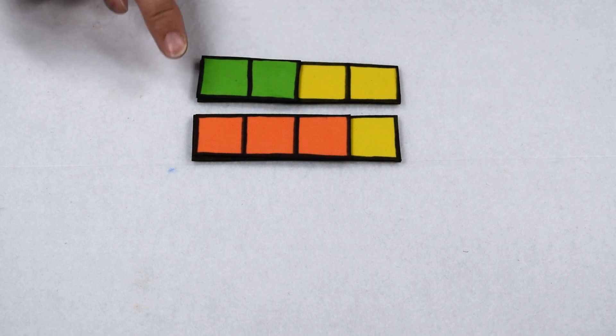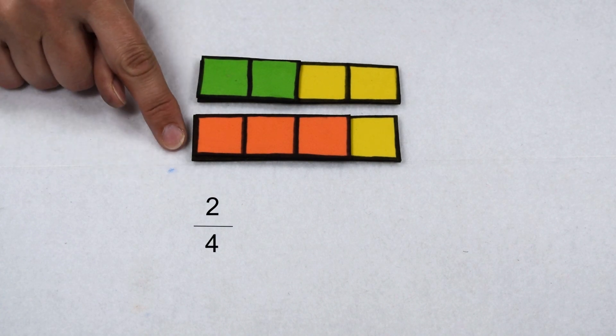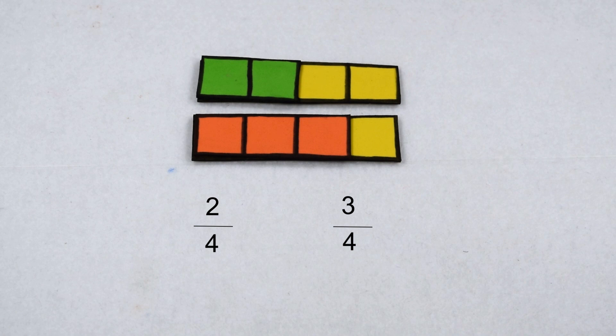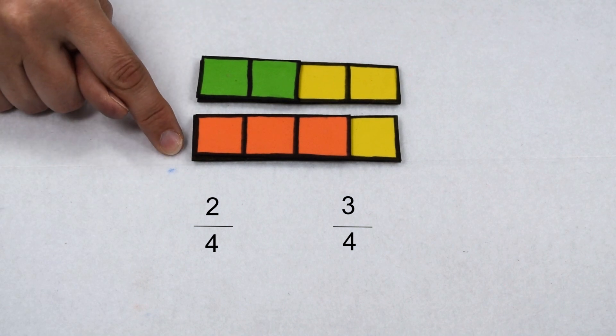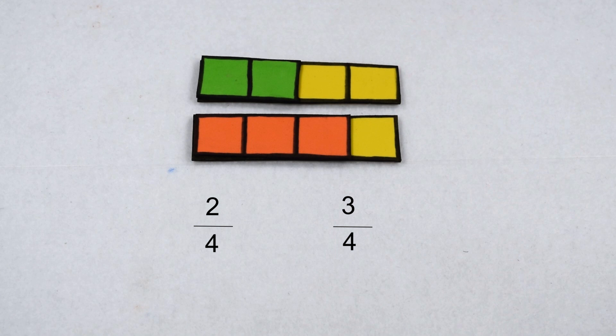Let's start by comparing fractions. Here we have 2 fourths compared to 3 fourths. We're going to start with fractions that have a common denominator, so we're working with all equal size pieces. We can see on our fraction bar that 2 fourths takes up less space than 3 fourths. This tells us that 2 fourths is less than 3 fourths.